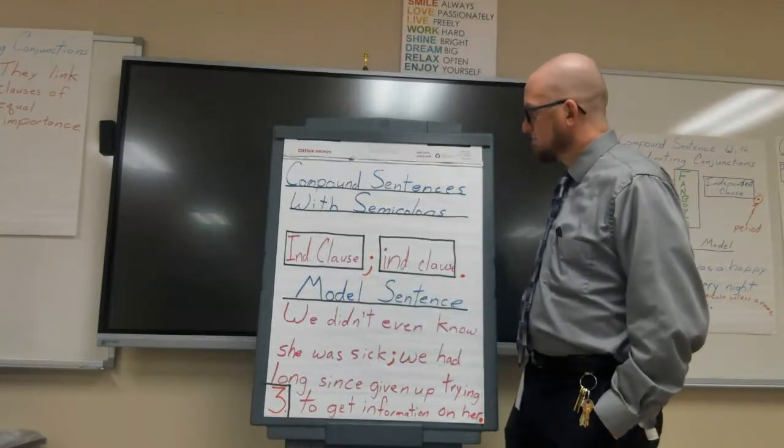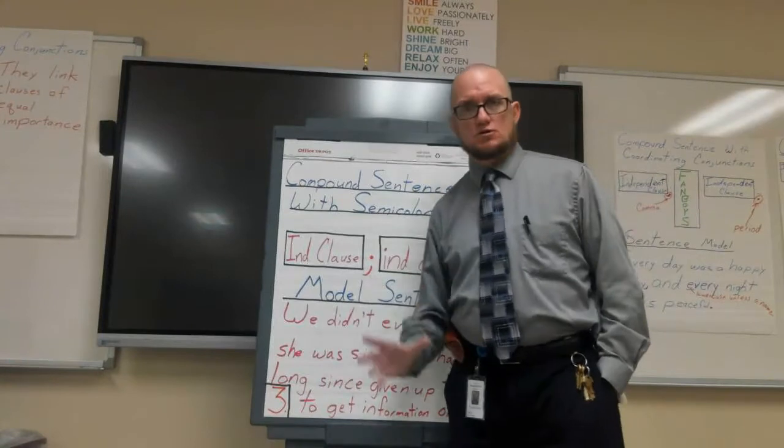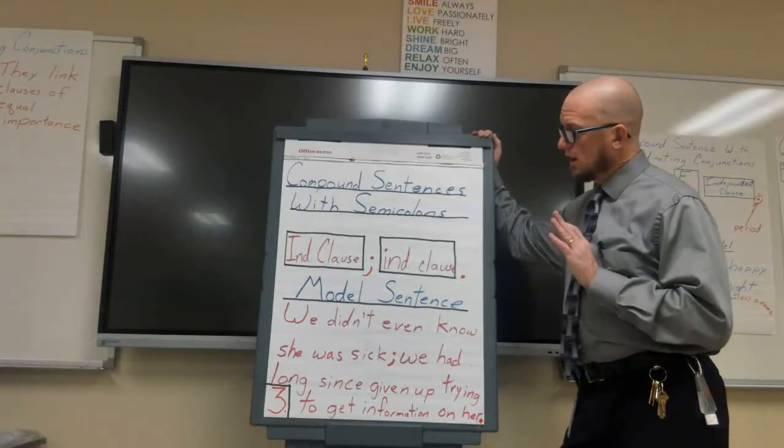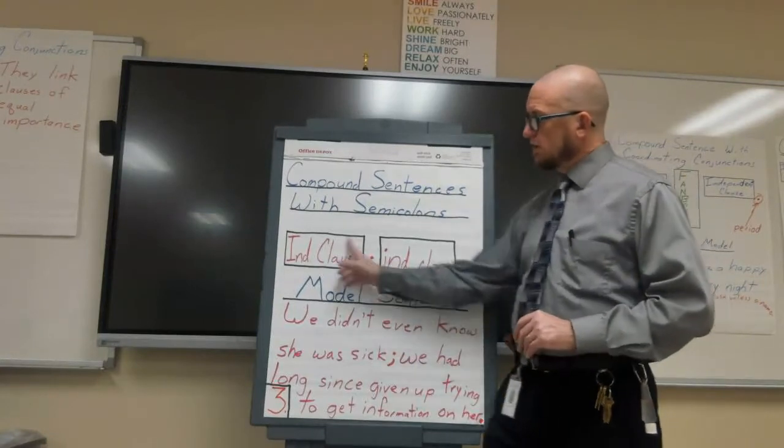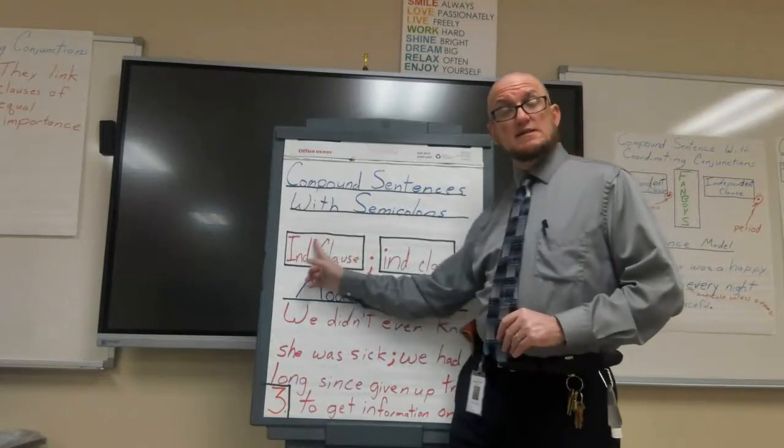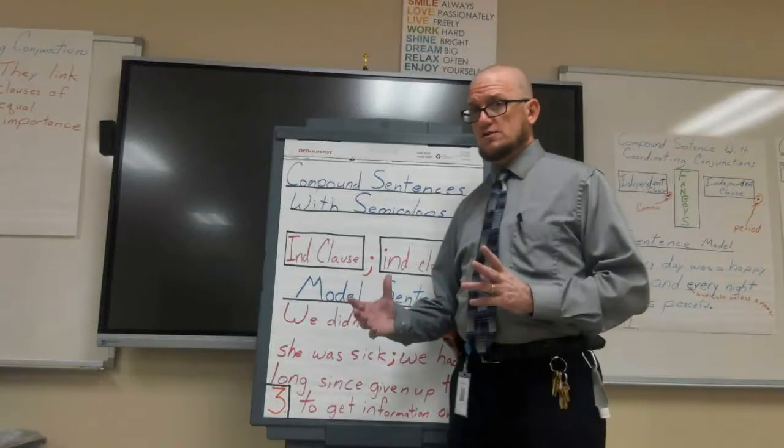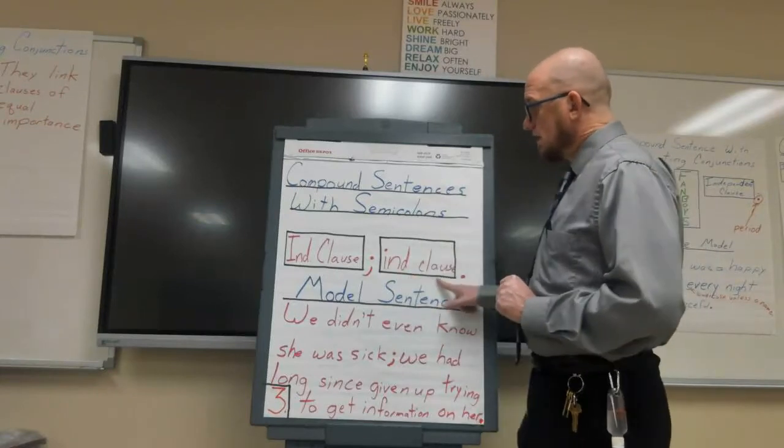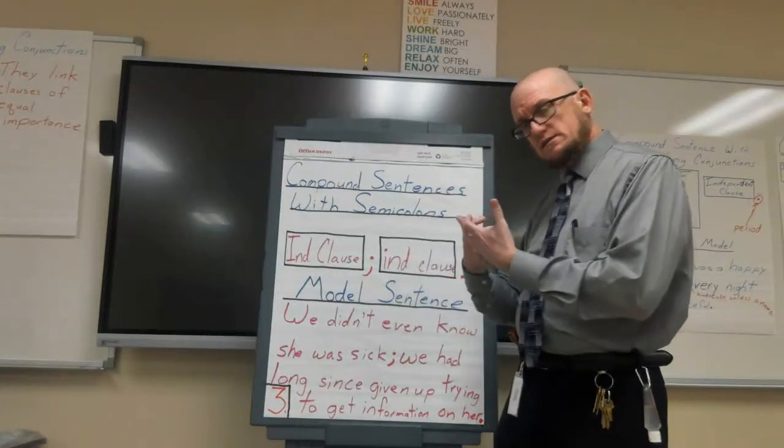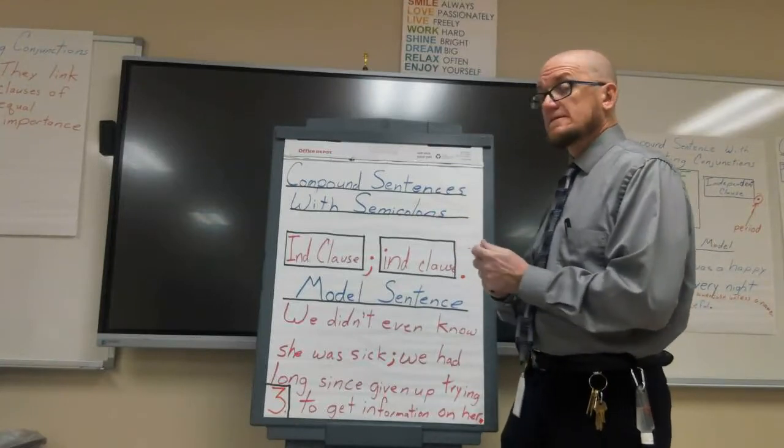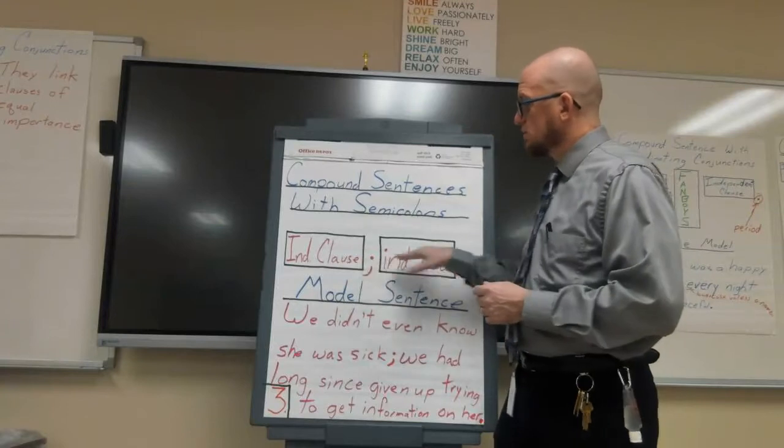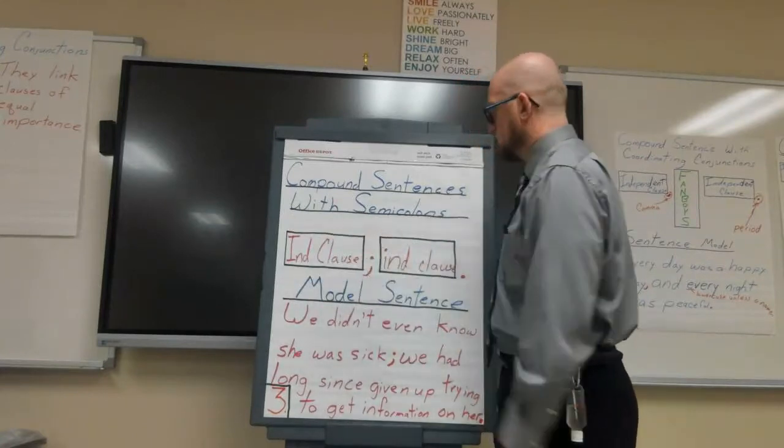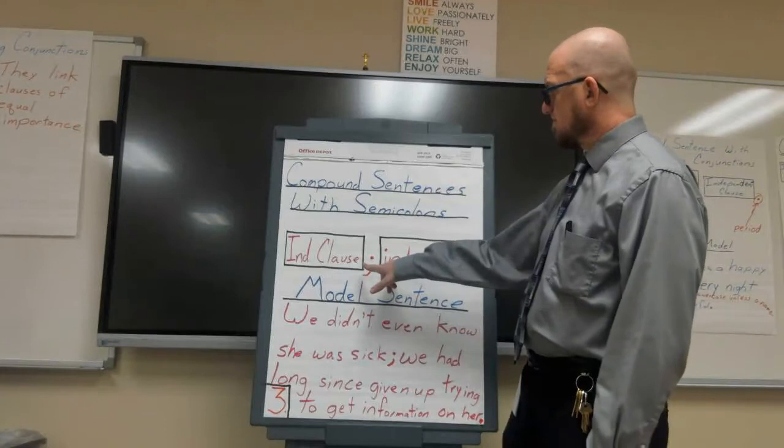This is the easiest and most straightforward way to use a semicolon: when you have an independent clause, which can stand by itself as a complete sentence—remember, independent clauses are adult clauses, they're independent—and you're linking another independent clause directly to it. Students often attempt to do this with a comma. Remember, commas are weak; they're not strong enough to link two independent clauses together.